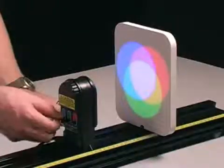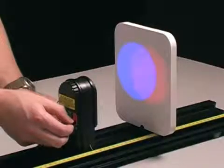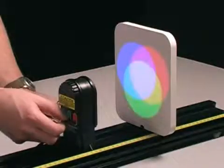The color mixer includes three LEDs: red, green, and blue. They can be individually adjusted to create a white light in the center.